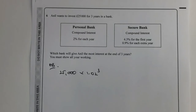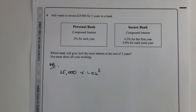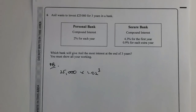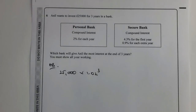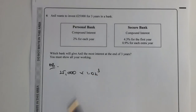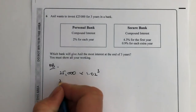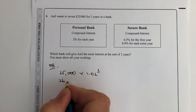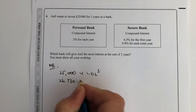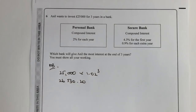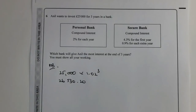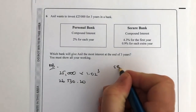If you're not sure about what I've done here, please do have a look at the playlist on compound interest and that will give you some idea of where this information has come from. If I put that into my calculator, at the end of the three year period I'm going to get £26,530 and 20p. So let's have a look then at Secure Bank.